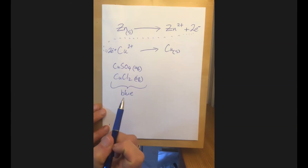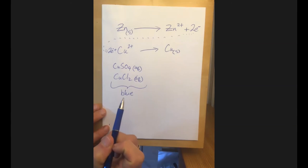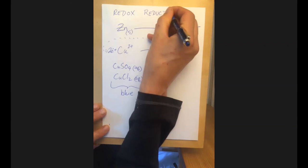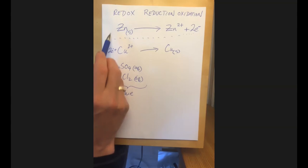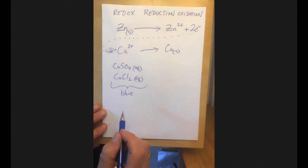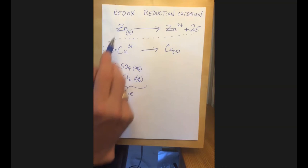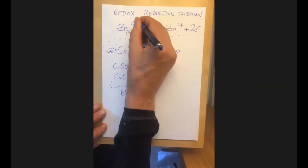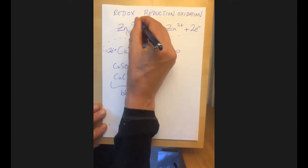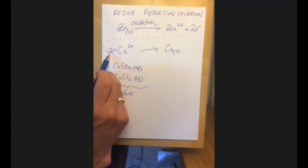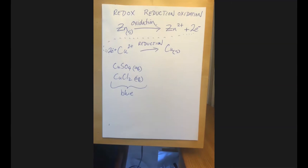There's a handy phrase to keep track of things. They're called redox reactions because they have a reduction and an oxidation. The phrase is: the loss of electrons is oxidation, and the gaining of electrons is reduction. The zinc reaction — which lost electrons — is the oxidation. The copper reaction — which gained those two electrons — is the reduction.